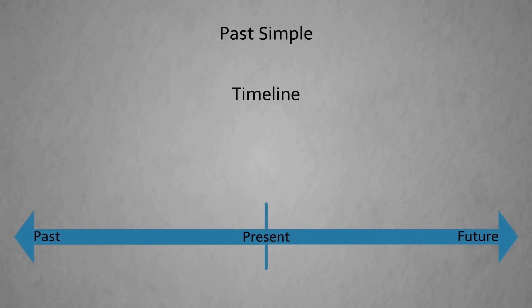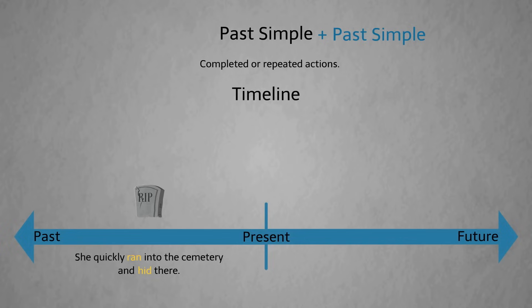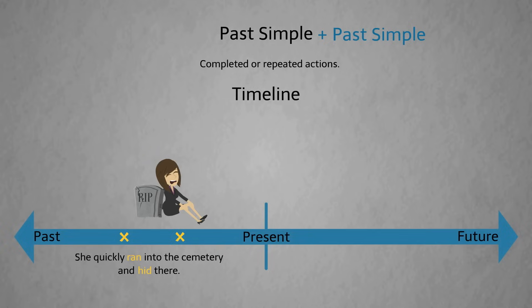We use the past simple for completed actions or repeated actions. For example, 'she quickly ran into the cemetery.' This action is finished and completed. When we use two past simple actions, the second action happened after the first. For example, 'she quickly ran into the cemetery and hid there' — so she ran into the cemetery first, then she hid inside.